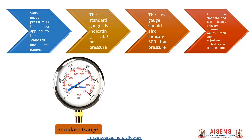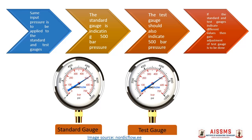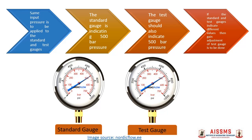It is expected that the test gauge should also indicate 500 bar pressure. If the standard and test gauges indicate different values, we need to adjust the gain of the test gauge so that it indicates the same reading as that of the standard gauge.